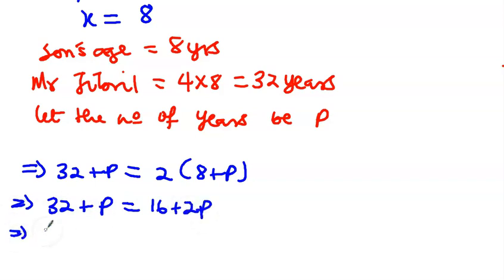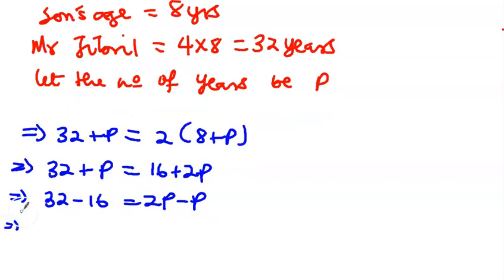So let's find p. Thirty-two plus p is equal to sixteen plus two p. We can group the like terms. Thirty-two minus sixteen will be two p minus p. So thirty-two minus sixteen is sixteen, which is equal to p. So in sixteen years to come, the father will be twice as old as his son.